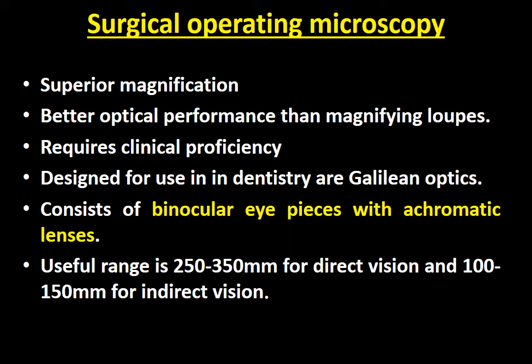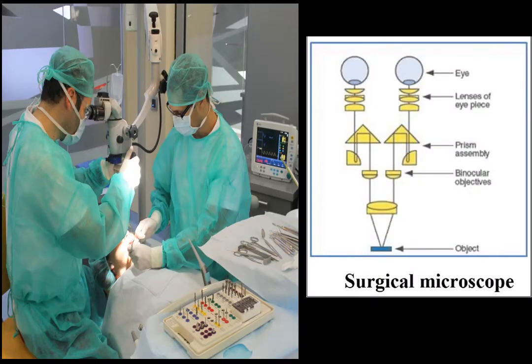This microscope has binocular eyepieces with achromatic lenses, similar to prismatic loops. The useful range is from 250 to 350 mm for direct vision and 100 to 150 mm for indirect vision. The Galilean optical principle shown on the right side of the slide features two eyepiece lenses, a prismatic assembly, backlight reflection, and binocular lenses that focus the object using converging rays.